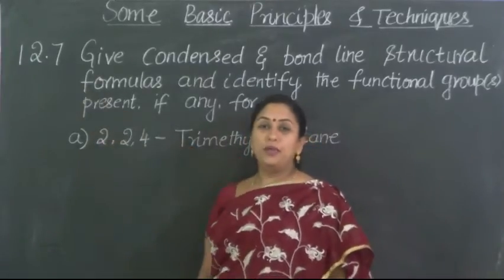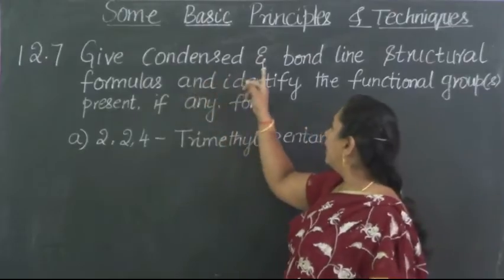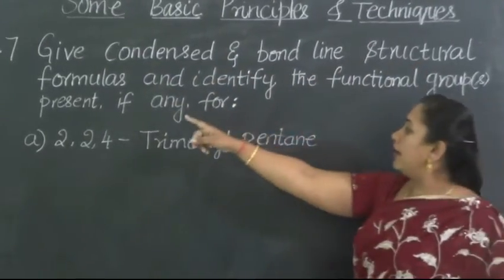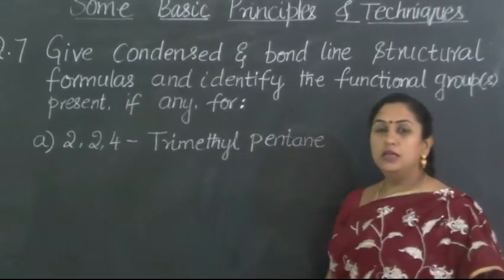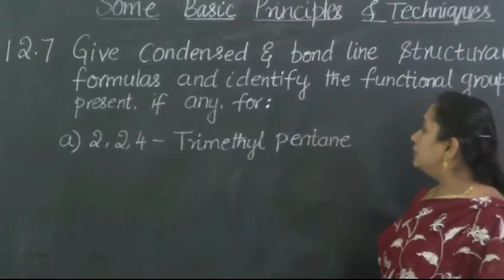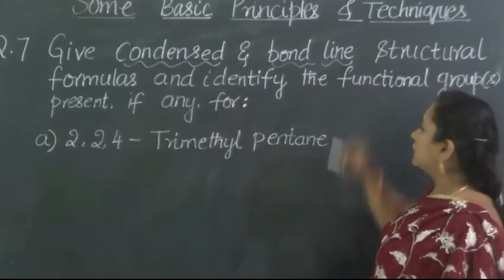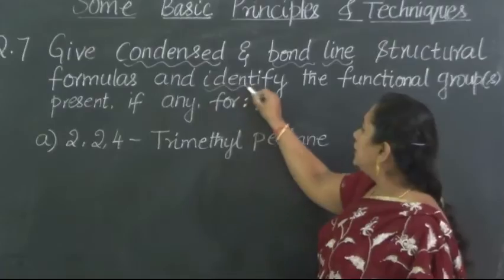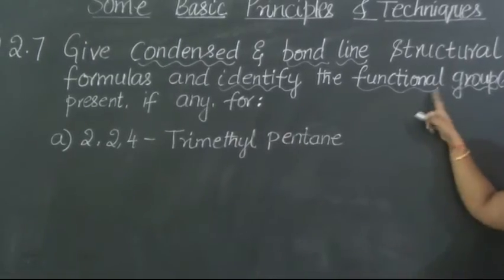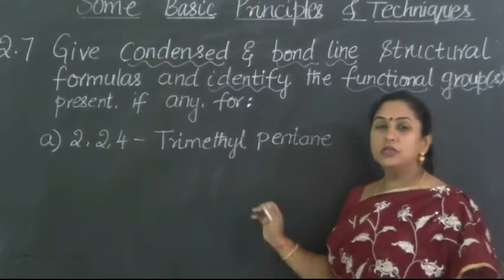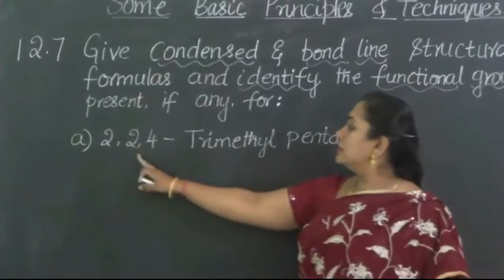Let us take up question number 12.7. What is being asked in this question? Give condensed and bond-line structural formulas and identify the functional group or groups present, if any. So in this question they are asking us to write the condensed formula, the bond-line structural formula, and also identify the functional groups present for the compound given to us.